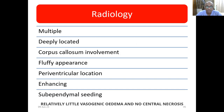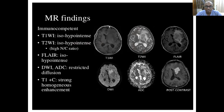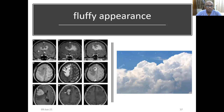Looking at the MR findings: on T1 weighted imaging it is hypointense to isointense; on T2 weighted it is hyperintense. On FLAIR you can see the edema. On diffusion weighted imaging it appears hyperintense, showing restriction. On the corresponding ADC map the area looks dark. On post-contrast imaging there is homogeneous, brilliantly enhancing lesion — it looks like a sky pattern.